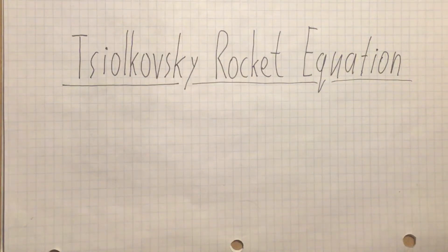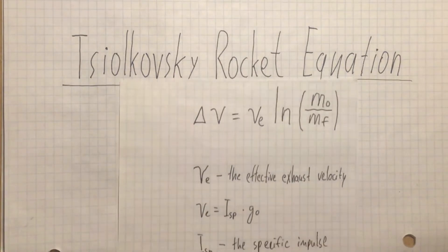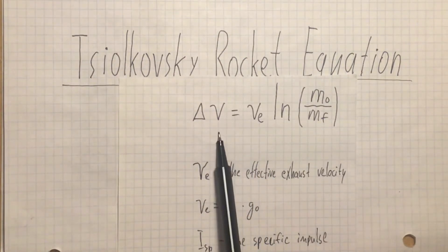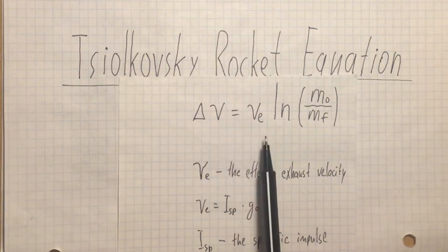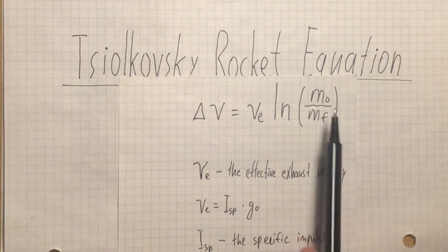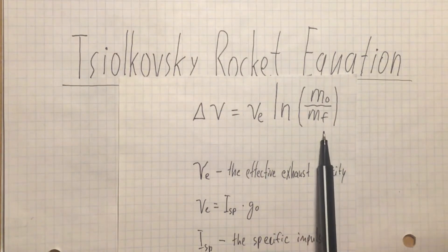Tsiolkovsky rocket equation, also known as ideal rocket equation, is one of the most important equations in rocket science. The equation describes the relationship between the maximum change of velocity of the rocket to the effective exhaust velocity, the initial mass of the rocket and the final mass of the rocket, when all of the fuel is combusted.